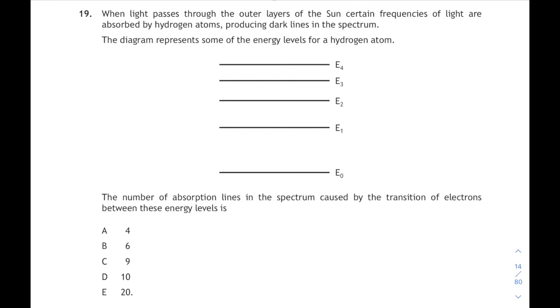Question 19. When light passes through the outer layers of the sun, certain frequencies are absorbed by hydrogen atoms producing dark lines in the spectrum. This diagram represents some of the energy levels in a hydrogen atom. We have to figure out the number of possible transitions that electrons can do between these energy levels. This is absorption spectrum, so white light shining through it, and the photons that correspond to certain frequencies and certain energies will cause electrons to jump up to higher energy levels. And we have to count the number of possible jumps that there are. So how many different ways can an electron move between two energy levels? Well if you do it the long way and you count them all, you count all the jumps from the bottom level, all the jumps from the first level, second level, third level and so on. Then there are ten possible jumps.